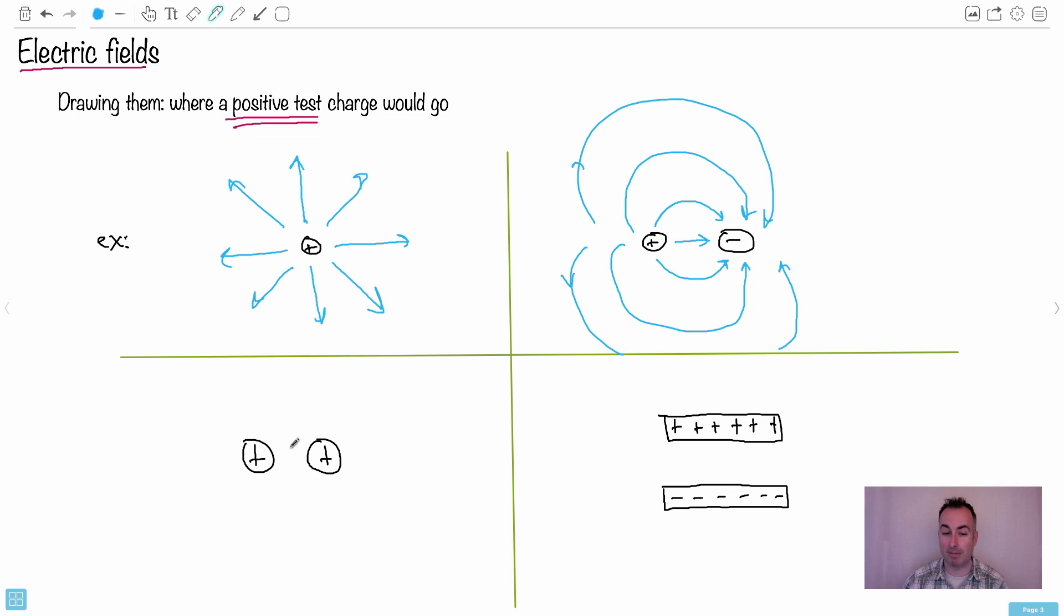How about this one right here? A positive and a positive. It wants to go away from this positive, but also away from that one. It's going to go sort of curve upwards in a way, because it wants to try to get away. These are going to be asymptotic here. And of course, we're still going to have arrows going away, because they always want to go away here. Something like this.